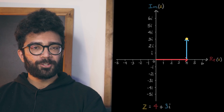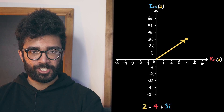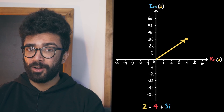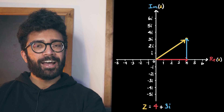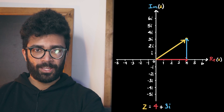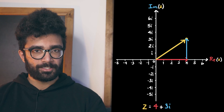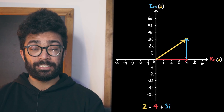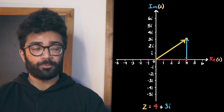Interestingly, we can also represent this same number with a vector, or arrow, starting at the origin and ending at our point here. This way, each of the parts of our number — the real part and the imaginary part — act like the horizontal and vertical components of the vector. This is why we can treat each part separately: because we treat them as if they're acting in perpendicular directions — the real direction and the imaginary direction in this abstract space of numbers.